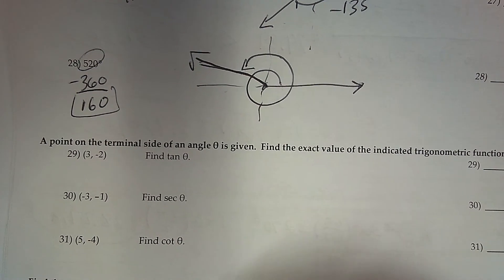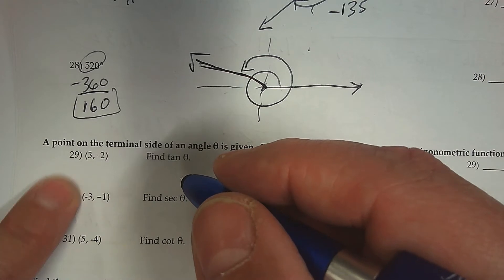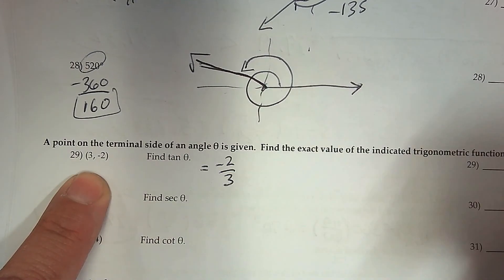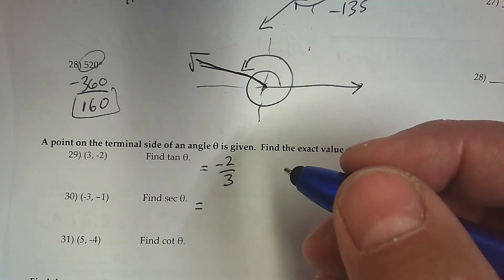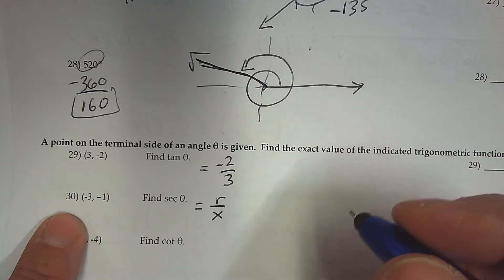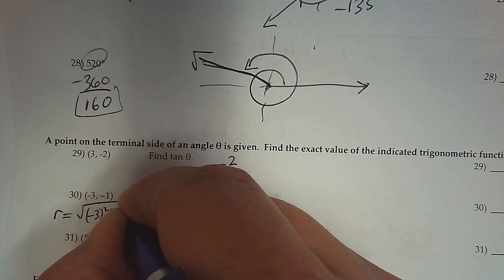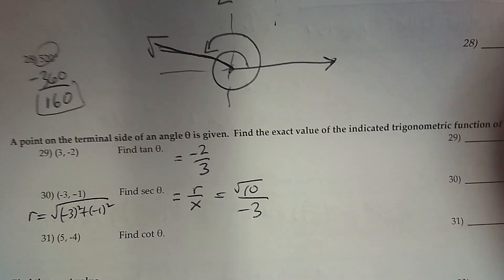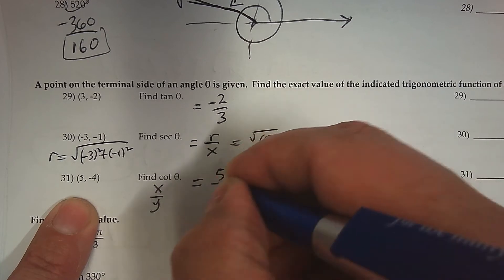Number 29. If given a point, can you find the trig value? The definition of tangent using a point is y over x. The y value is negative 2, the x is 3, so tangent equals negative 2 over 3. For secant, it's the reciprocal of cosine, which with a point is r over x. This is not a point on the unit circle, so the radius is not 1. The radius equals the square root of negative 3 squared plus negative 1 squared, which is root 10. Cotangent by definition is x divided by y.